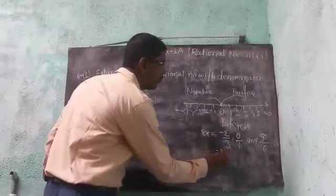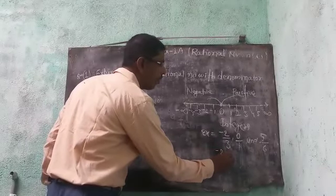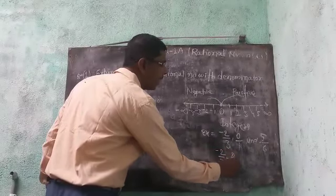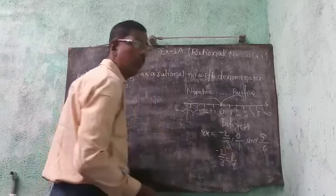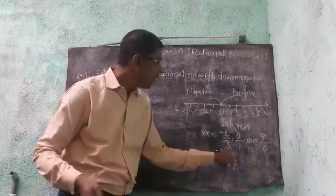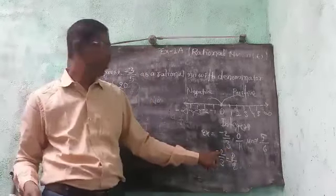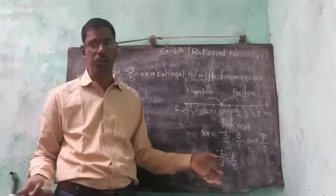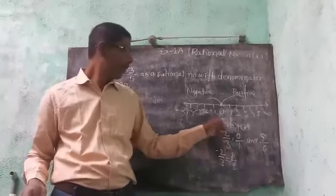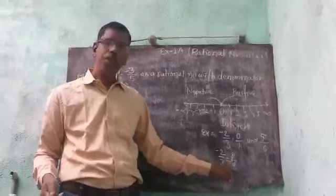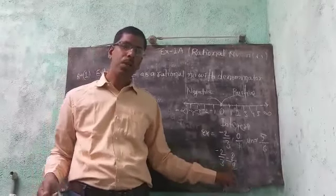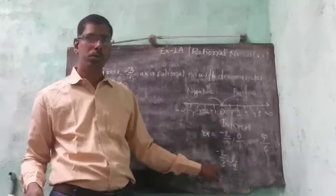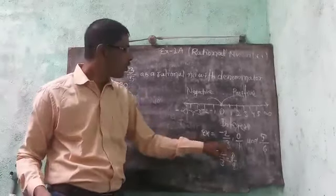Q is not equal to 0. For example, minus 2 by 3 is in the form of P by Q, where P equals minus 2 — an integer — and Q equals 3 — an integer. Condition: Q does not equal 0. Therefore, minus 2 by 3 is a rational number.